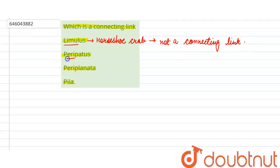Second option is Peripatus. Peripatus is the correct option because Peripatus is known as the connecting link between arthropods and annelids.